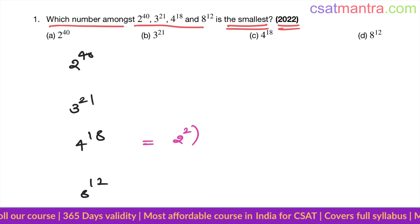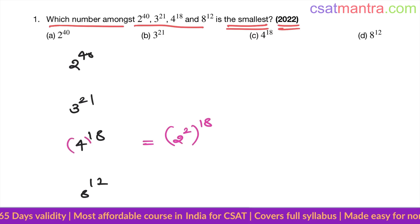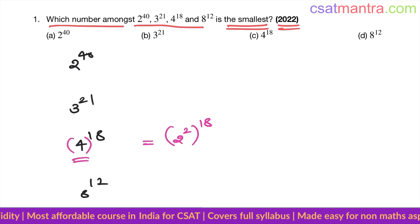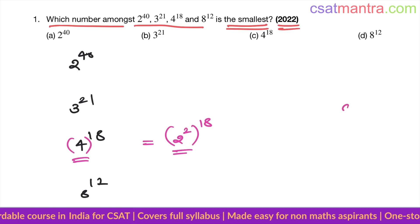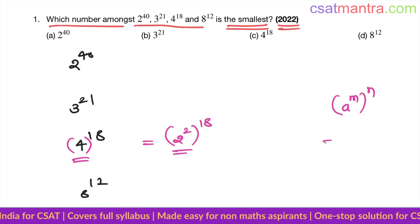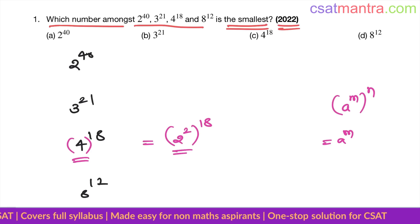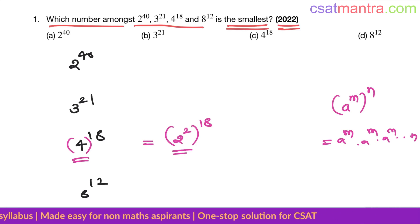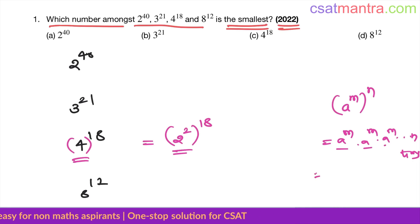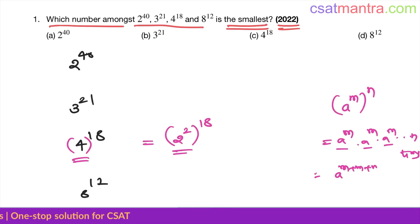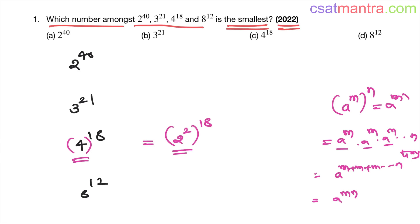I am writing 4 as 2 squared. So 4 power 18 becomes 2 squared, whole power 18. When you have a power m, whole power n, this means a power m into n. So 2 squared whole power 18 gives 2 power 2 into 18, which is 2 power 36.